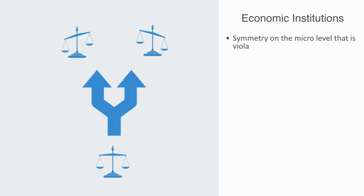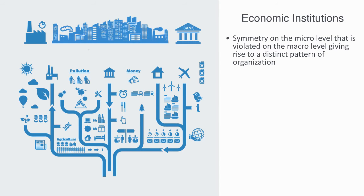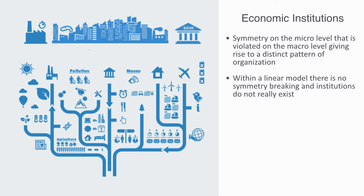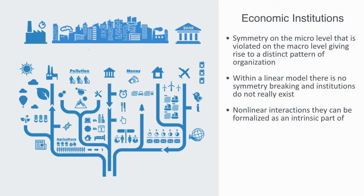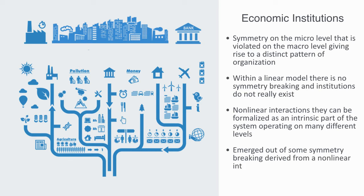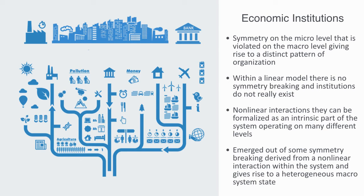With symmetry breaking, we get some symmetry on the micro level that is violated on the macro level, giving rise to a distinct pattern of organization. Because of the nonlinear interactions of synergies and interference within an economic system, we get symmetry breaking and the emergence of distinct patterns of organization on different levels within the economy — and this is one way of understanding economic institutions. Within a linear model, there is no symmetry breaking and institutions don't really exist; inasmuch as they do exist, they are typically derived from exogenous factors such as transaction costs. But with nonlinear interactions, they can be formalized as an intrinsic part of the system, operating on many different levels — from the household, to businesses, to cities, to whole distinct economies — all of which are non-equilibrium phenomena that have emerged out of some symmetry breaking, giving rise to a heterogeneous macro system.